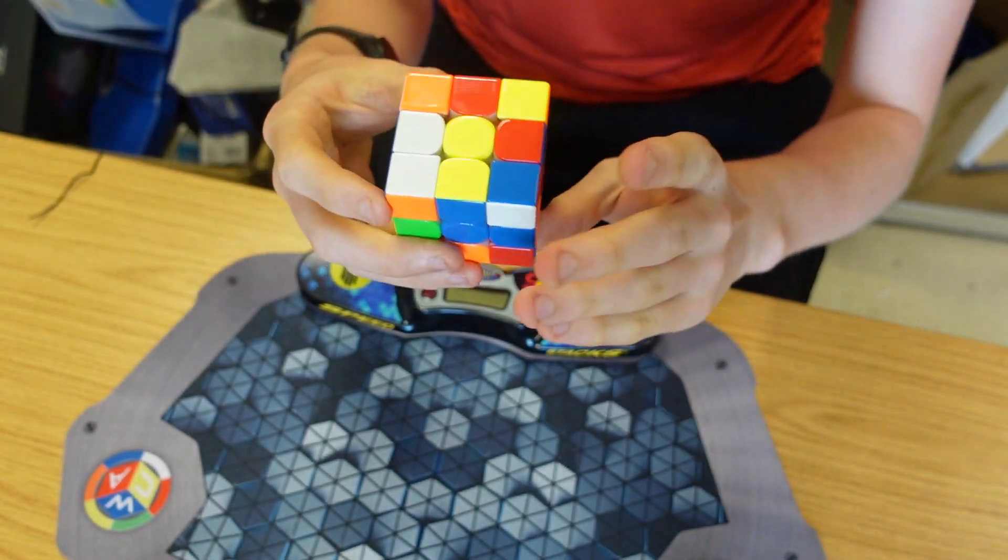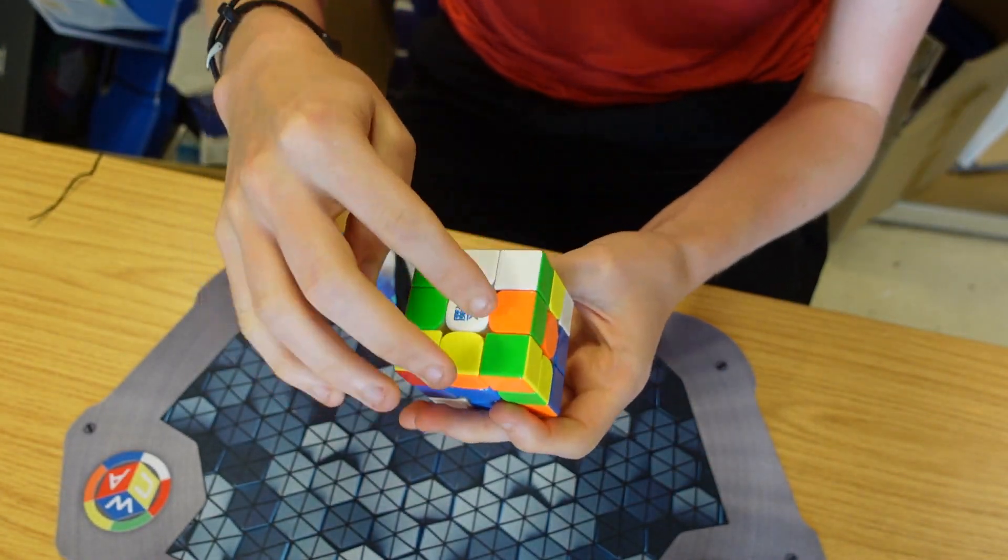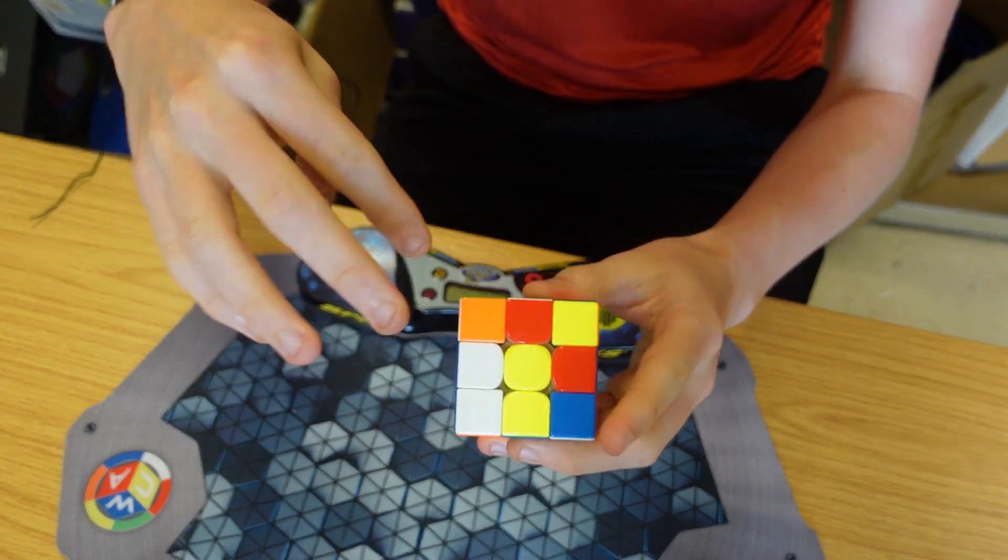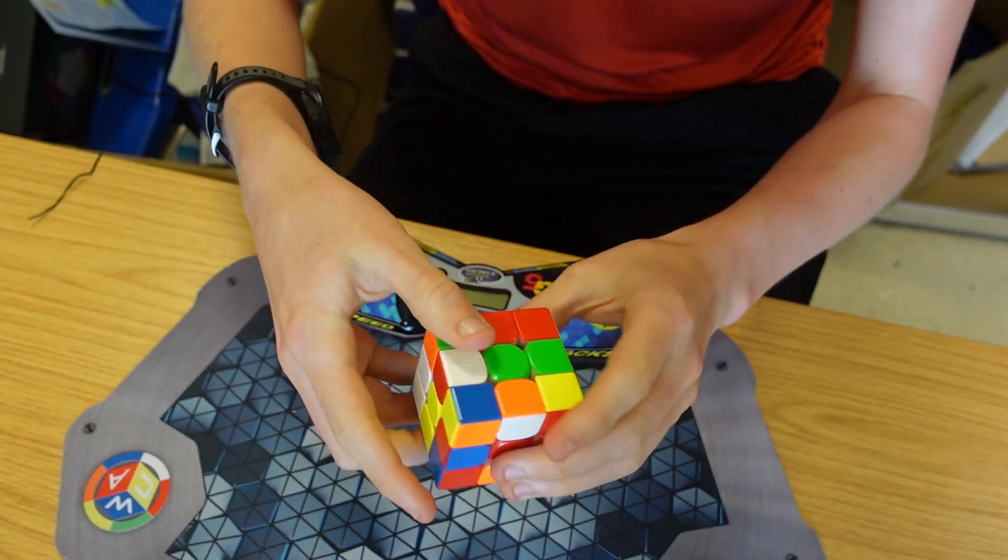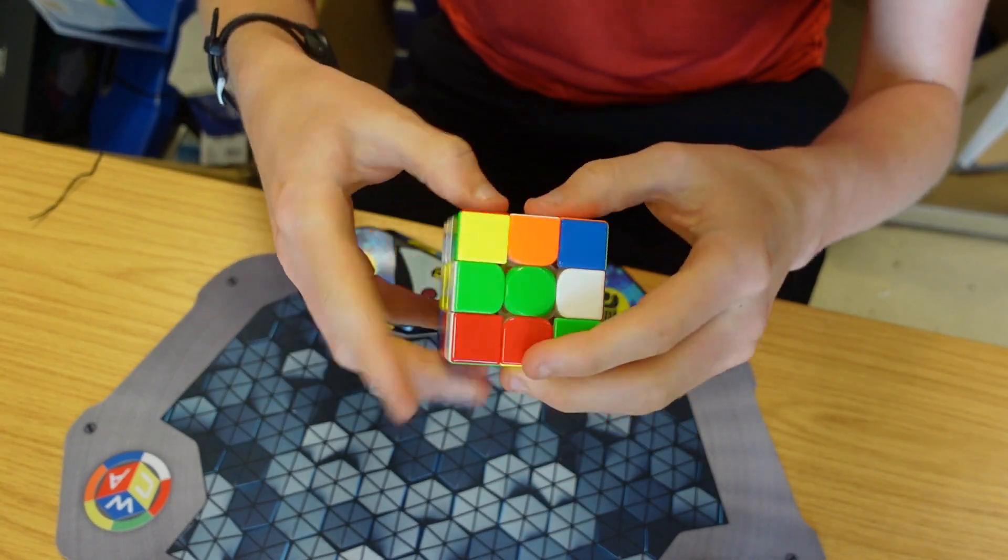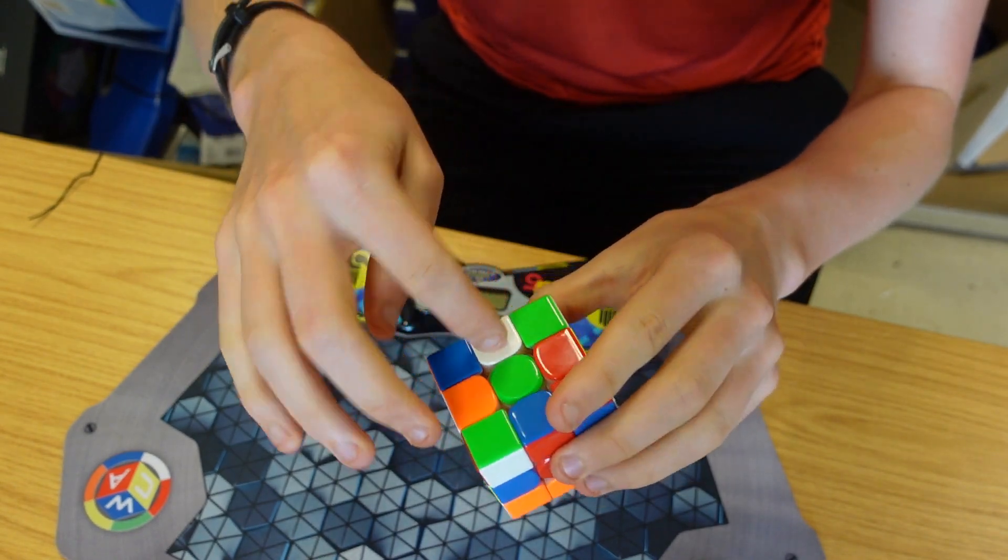The first step towards solving this cube is making a white cross. We're going to do that by first putting all of the white edges on the yellow side. We're going to move this one down, then this one down there, and then this final one down there.